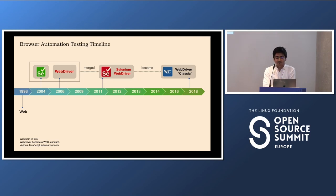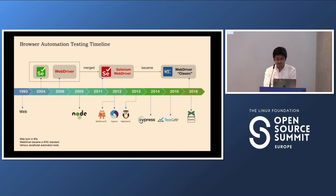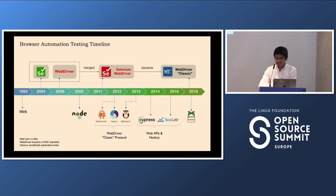While this advancement was happening, other advancements were taking place simultaneously. In 2009 we got Node.js, and with that there was an increase in demand for automation tools based on Node.js. So with time we got many tools such as WebDriverIO, Appium, Nightwatch, Cypress, TestCafe, and Puppeteer. These tools can be categorized into three sets based on their underlying technology: WebDriverIO, Appium, and Nightwatch use the WebDriver Classic protocol; Cypress and TestCafe use Web APIs and Node.js; and Puppeteer uses the Chrome DevTools Protocol.